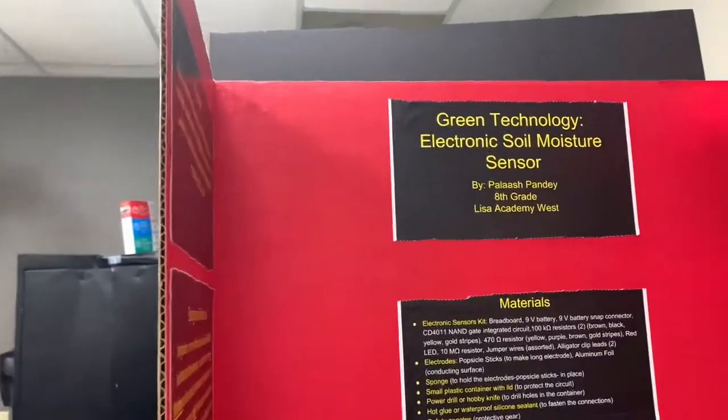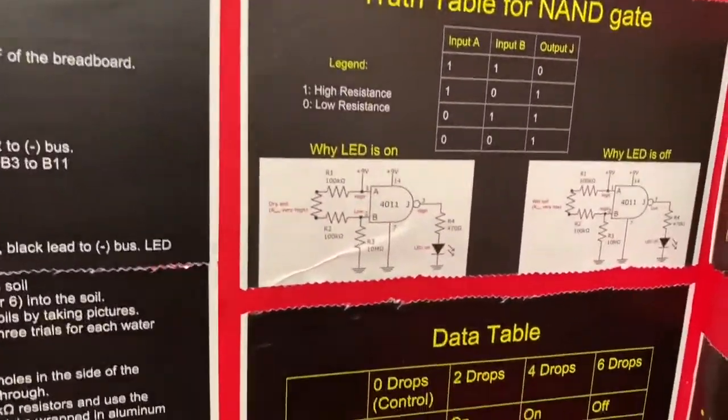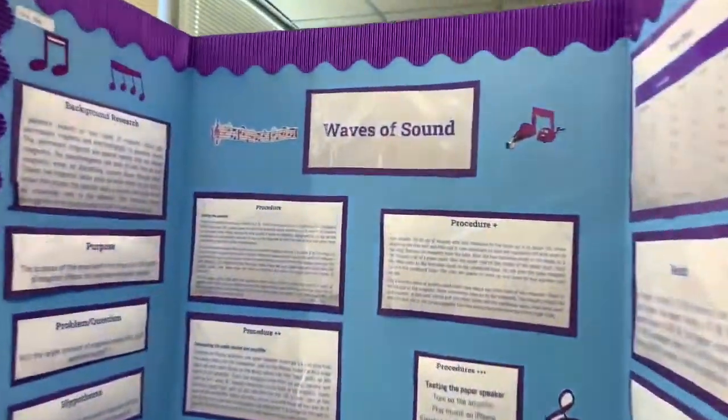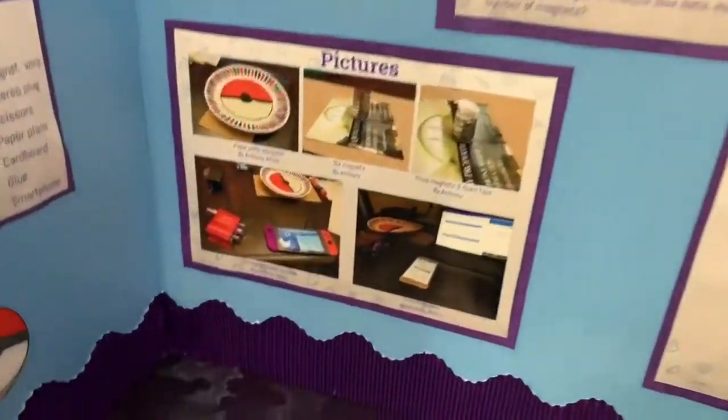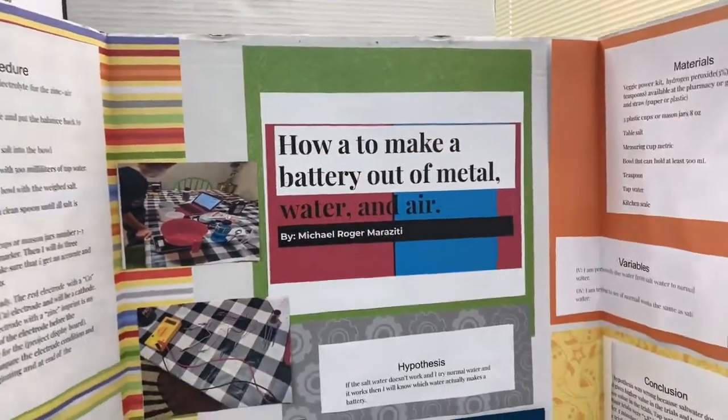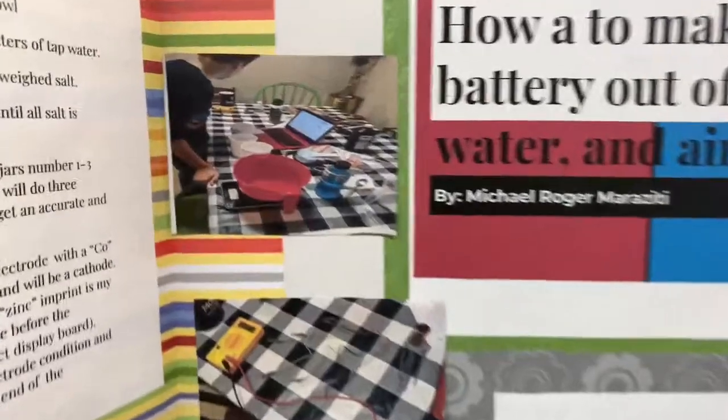Here we have 'Door Cell Battery,' then 'Green Technology: Electronic Soil.' Next up appears to be 'Waves of Sound' with pictures, followed by 'How to Make a Battery Out of Metal, Water, and Air.'